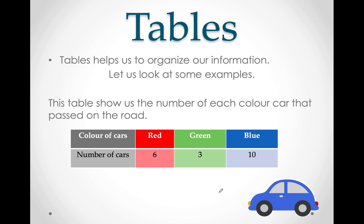Now let us look at tables. Tables also help us to organize our information — we collect information and tables help us to put it in an organized way. This table shows us the number of each color car that passed on the road: red cars, green cars, and blue cars. It tells us the number of each: 6 red cars, 3 green cars, and 10 blue cars. That's how we use a table.